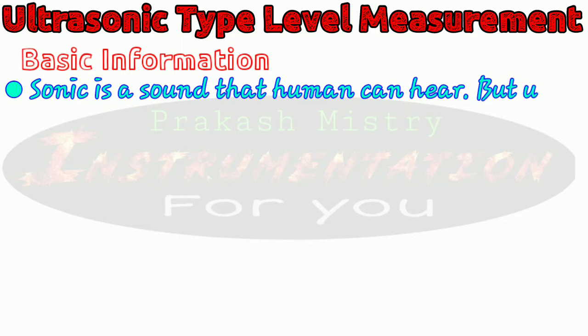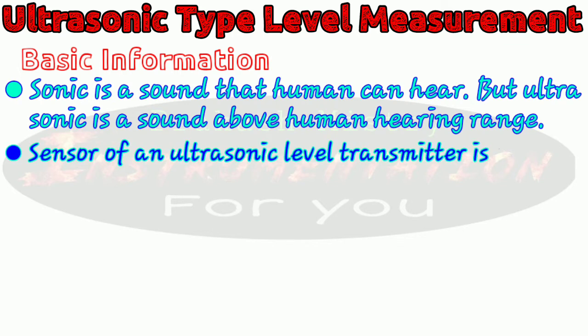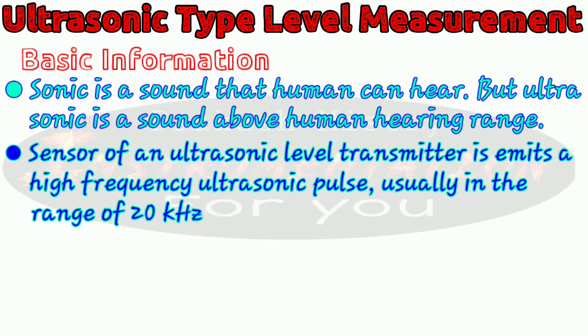Sonic is the sound that we can hear, but ultrasonic is the sound above our hearing range. We can listen up to a maximum frequency of 20 kHz, and ultrasonic frequency is above 20 kHz. The sensor of the ultrasonic level transmitter emits high frequency ultrasonic pulses, usually in the range of 20 kHz to 200 kHz. Lower frequency instruments with higher amplitudes are used for more difficult level measuring applications such as long distance or solid level measurement, while higher frequency instruments are used for shorter liquid level measurement.